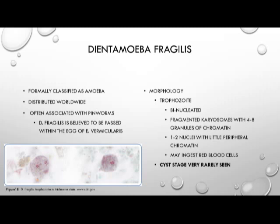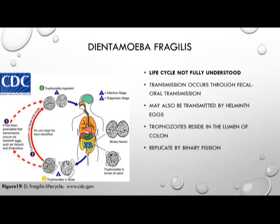The cyst stage was believed to not exist in Dientamoeba fragilis until recently — a recent report indicates the cyst stage can occur but is rarely seen. The life cycle is poorly understood, but transmission is believed to occur through fecal-oral transmission and may also be transmitted through the helminth egg of Enterobius vermicularis. Those trophozoites, once ingested, reside in the lumen of the colon and replicate via binary fission.